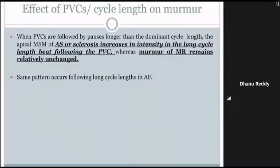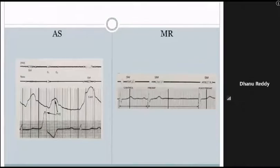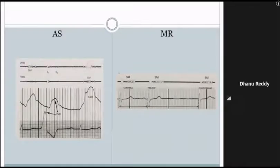When premature ventricular complexes are followed by pauses longer than the dominant cycle length, the apical mid-systolic murmur of aortic stenosis or sclerosis increases in intensity in the long cycle-length beat following the PVC, whereas the murmur of mitral regurgitation remains relatively unchanged. The same pattern follows the long cycle length in atrial fibrillation. In the left image, after a PVC, there is augmentation of the systolic murmur in the next beat; in MR, no such change occurs.